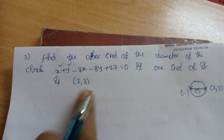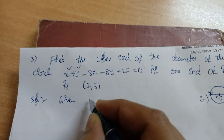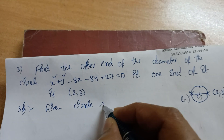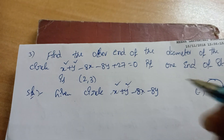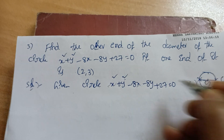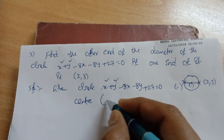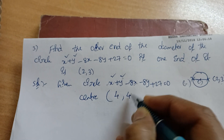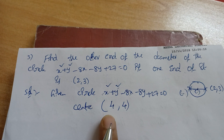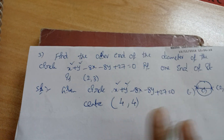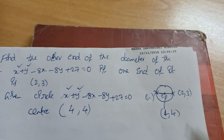The given circle equation is x² + y² − 8x − 8y + 27 = 0. The center is (−g, −f). Since the x coefficient is −8, we get 2g = −8 so g = −4, giving −g = 4. Similarly f = −4, giving −f = 4. So center = (4, 4).